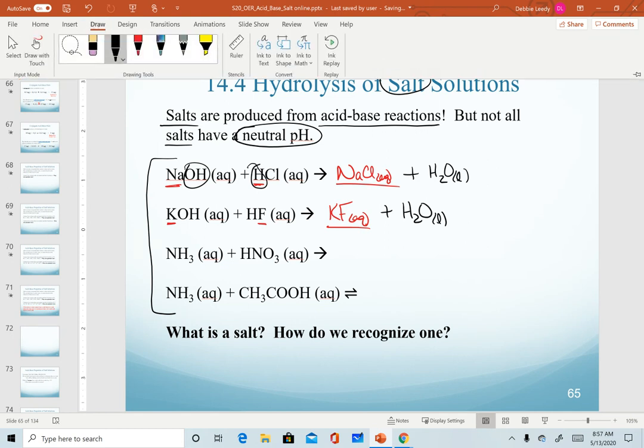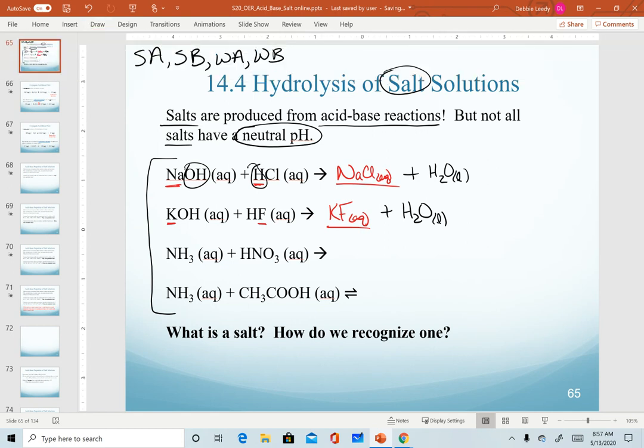In our third example, notice that we no longer have a hydroxide base here. Our base is the weak base of ammonia. So I can't form water anymore because I no longer have the Arrhenius base. In this one, we're essentially carrying out or predicting products as a combination reaction. So technically, the salt that we're forming is ammonium nitrate. We don't form water here because we don't have a hydroxide base.